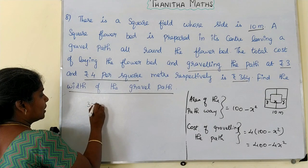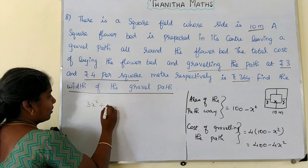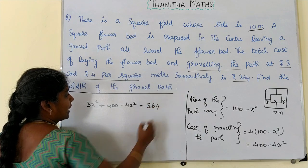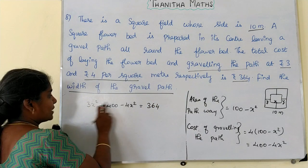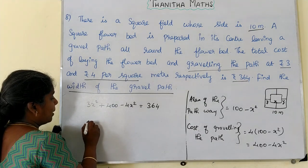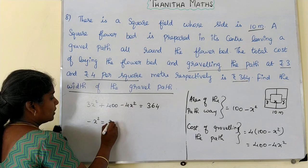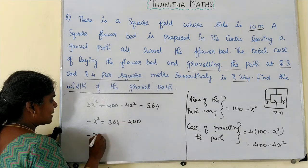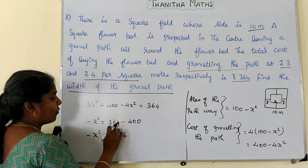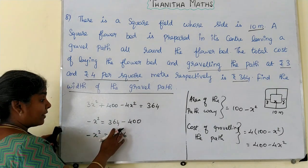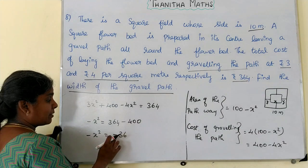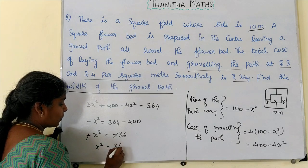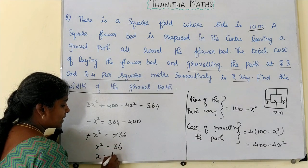The flower bed cost is 3x squared and the pathway cost is 400 minus 4x squared. The total cost is 364. Solving: 3x squared plus 400 minus 4x squared equals 364, giving x squared equals 36, so x equals plus or minus 6.